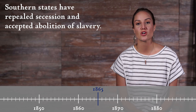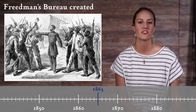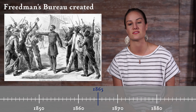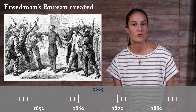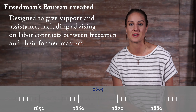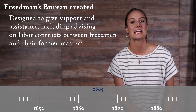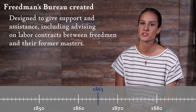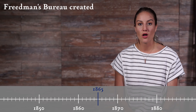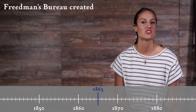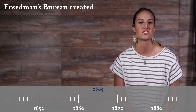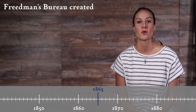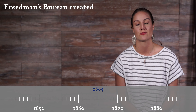On March 3rd, 1865, the Freedmen's Bureau was created by Lincoln and administered under the U.S. Army. This was a federal bureau designed to give support and assistance, including advising on labor contracts between freedmen and their former masters. It also was heavily involved in education, a crucial element of Reconstruction, since many, if not most, slaves were actively prohibited from learning how to read and write. Literacy was a crucial element of political and societal integration.